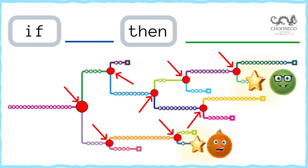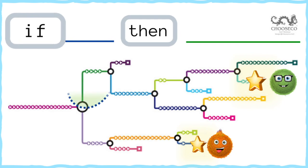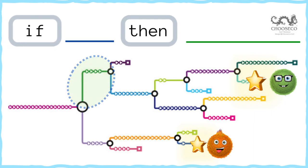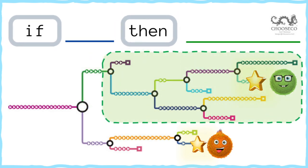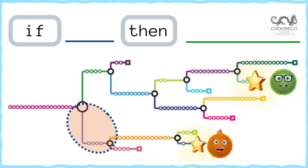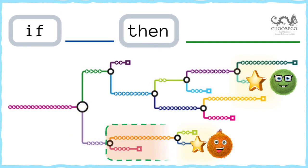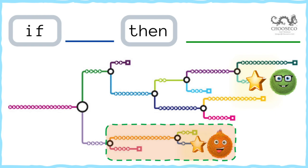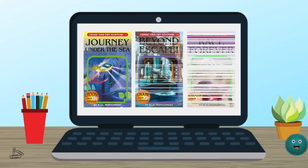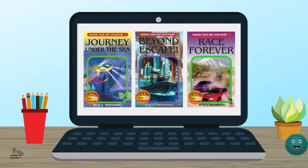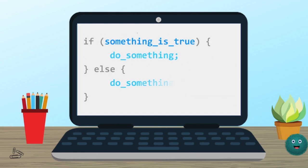Those are the if-then statements we were talking about before. If you choose option one, then something will happen. But if you choose the other option, then the path the story takes will be totally different. So what does this have to do with coding? Well, just like a choose-your-own-adventure author, programmers also use conditional statements like this to make their code more dynamic and interesting.